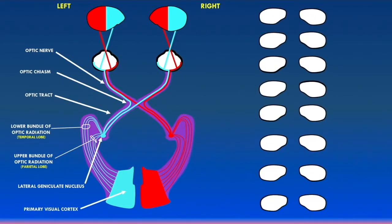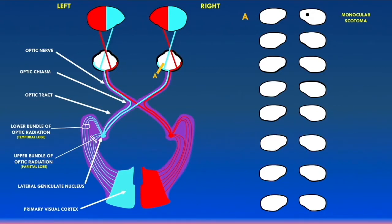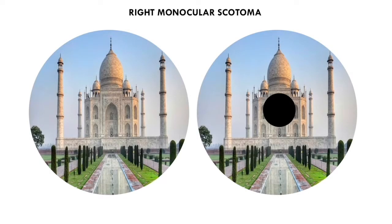Let's first talk about a lesion at point A, which is a lesion of the retina of the right eye. Damage to the retina can lead to what's called a scotoma — a noticeable blind spot in the visual field. This is called a monocular scotoma because there is a scotoma in the right eye. If the lesion affects the macula, the scotoma can appear much more central. So there is a noticeable blind spot in the patient's right eye.